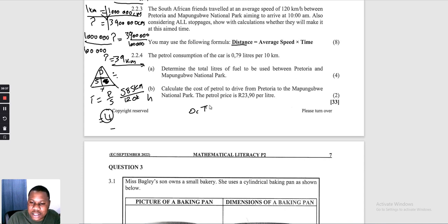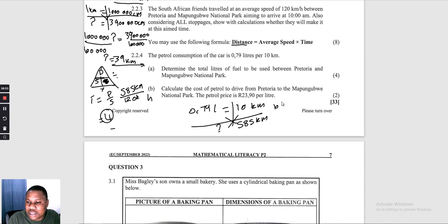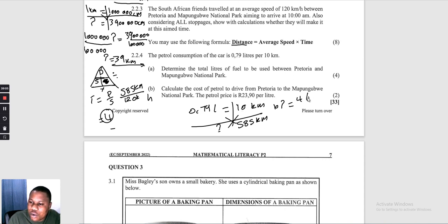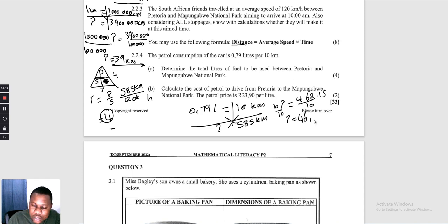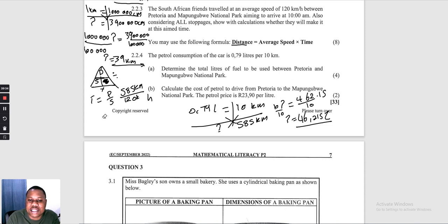Question 2.2.4: petrol consumption is 0,79 litres per 10 km. Determine total litres needed for 585 km. Cross multiplying: question mark × 10 = 0,79 × 585 = 462,15. Dividing both sides by 10 gives 46,215 litres. These people will need 46,215 litres of petrol from Pretoria to Mapungube.